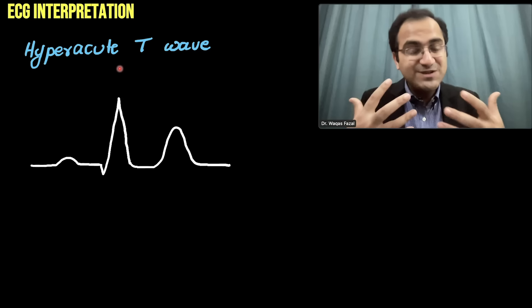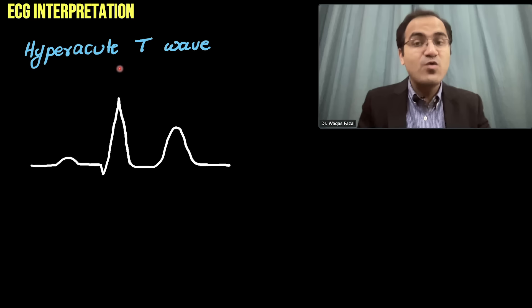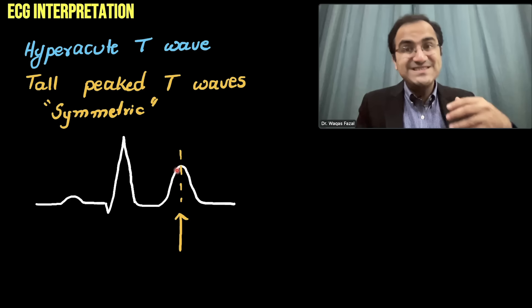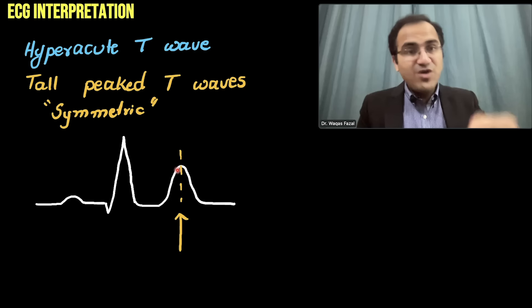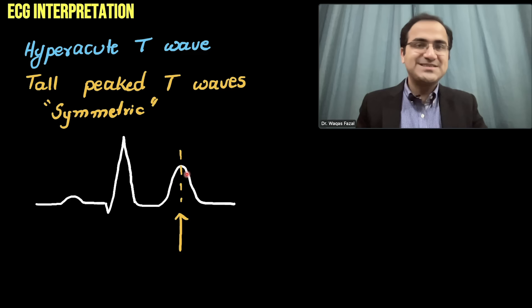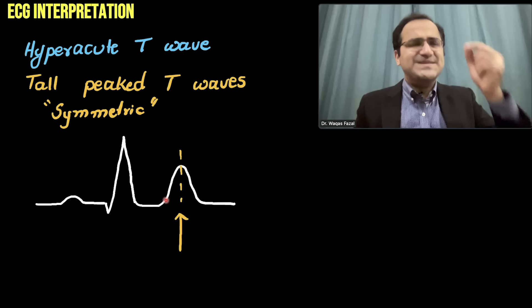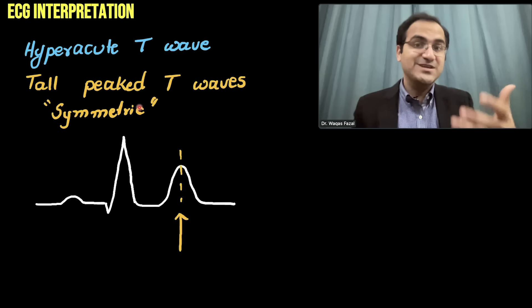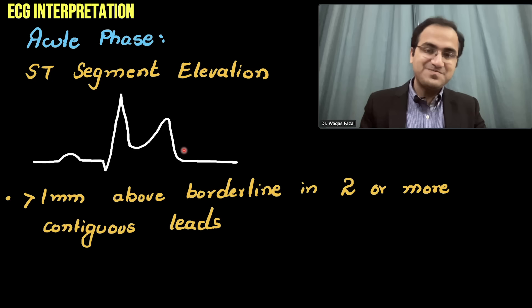In the hyper-acute phase, when there is initial blockage of the coronary vessel resulting in transmural ischemia, you will see peaked T waves that are symmetric. Remember, a normal T wave is always asymmetrical — it is tilted to one side. If the T wave is symmetrical, it is abnormal. The initial phase shows tall, peaked, symmetric T waves.